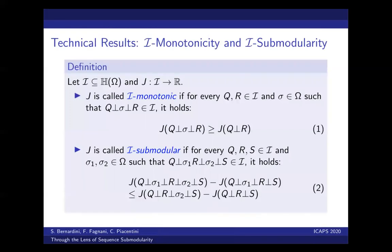Now, let's see what we can say about this algorithm from a theoretical point of view. We introduce a new concept of monotonicity and submodularity with respect to a set i that is contained in the set of sequences. And the novelty in this definition is that the new element sigma that is added to the sequences can appear not only at the beginning and at the end of them, as with the standard notions, but also in between the sequences.